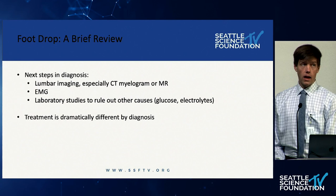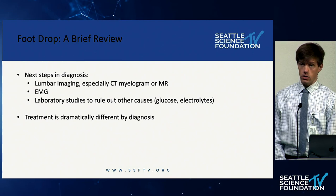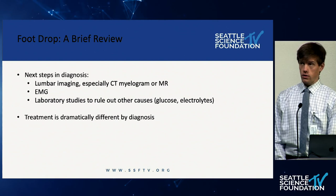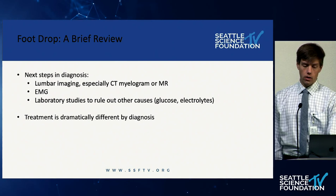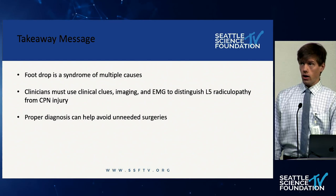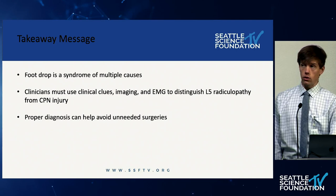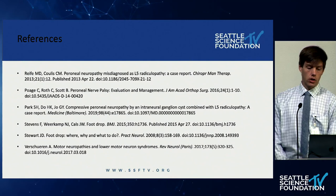Laboratory studies looking for other causes — diabetes or electrolyte abnormalities — are also important. Treatment is dramatically different: for L5 radiculopathy there may be a surgical intervention indicated, whereas common peroneal nerve injury is managed with avoidance of mechanical pressure and potentially hydrodissection or other more conservative management options. The takeaway points: foot drop is a syndrome of multiple causes, clinicians need to use clinical skills, imaging, and EMG to distinguish those causes. Proper diagnosis is essential as it can help avoid unneeded surgeries.